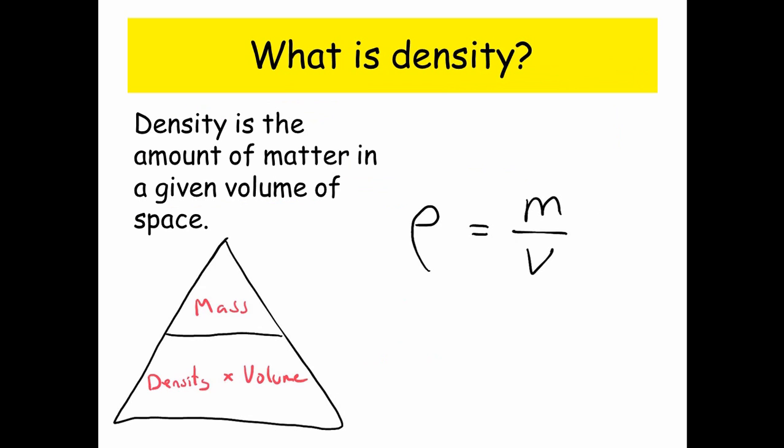And the triangle there in the bottom left hand corner, we can use that to find density. Density is mass divided by volume. And I've also got the formula here, which is rho equals m over v.